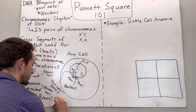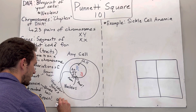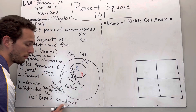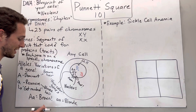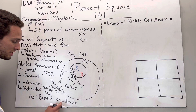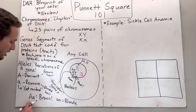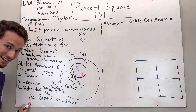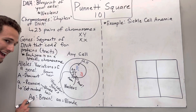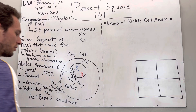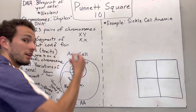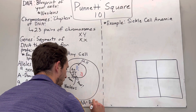To get a blonde-haired person, we have to have both recessive — little a, little a. That is going to determine that the person will have blonde hair. Both recessive alleles — that's called homozygous recessive. Homozygous recessive means you have two of the same recessive allele. Big A, little a is called heterozygous, meaning you have different alleles. And big A, big A is called homozygous dominant, which would also code for brown hair.